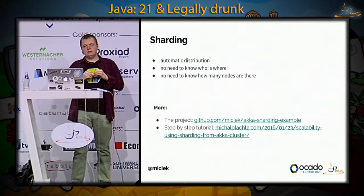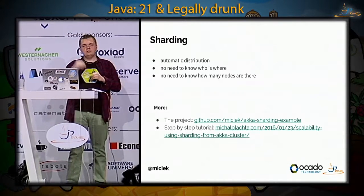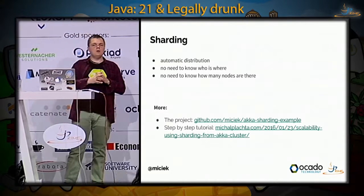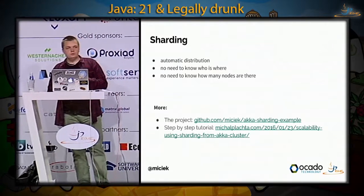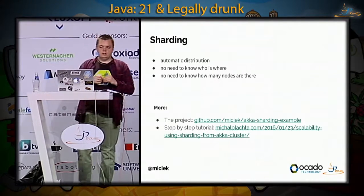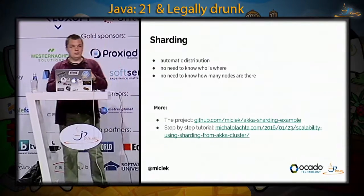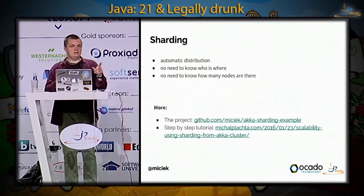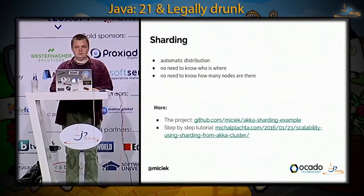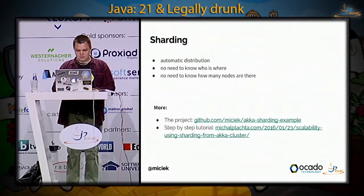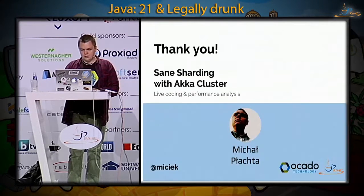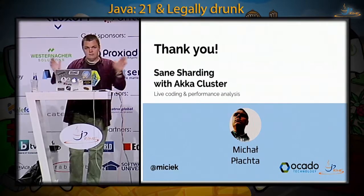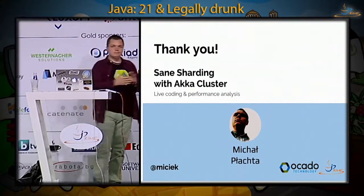The whole project is on GitHub with branches for each step — step 0, 1, 2, 3 — and the master branch is the sharded version. There's also a blog post that takes you step by step through the whole implementation. I will tweet the slides after the talk. Thank you very much — are there any questions?